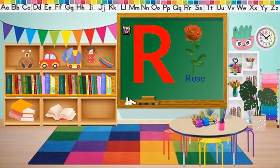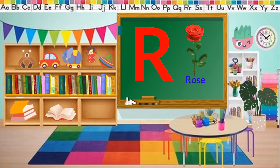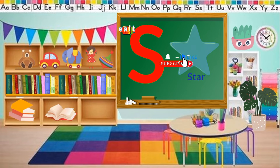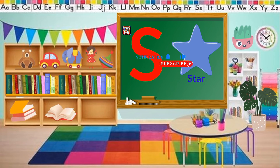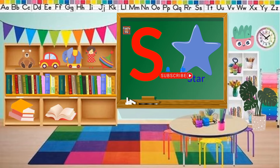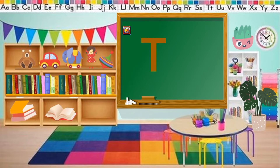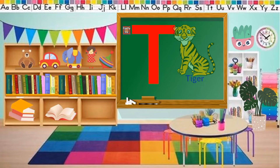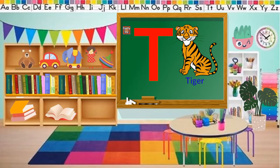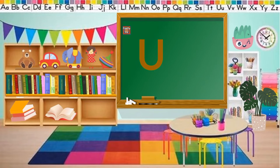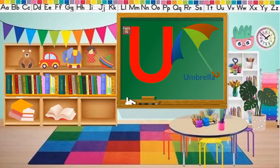R for Rose. S for Star. T for Tiger. U for Umbrella.